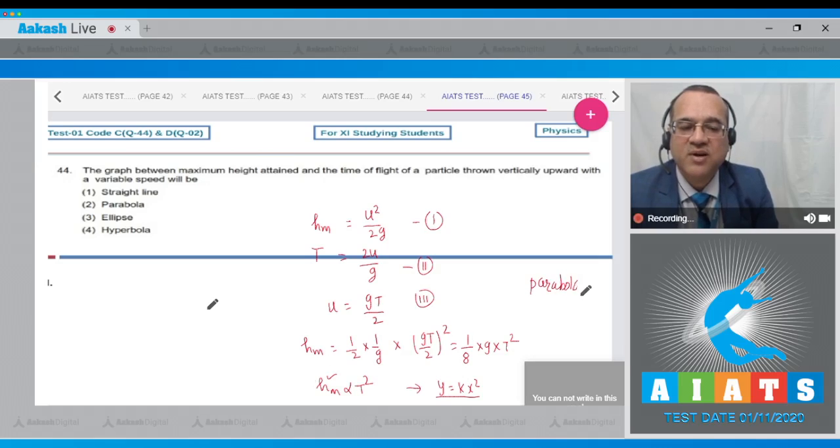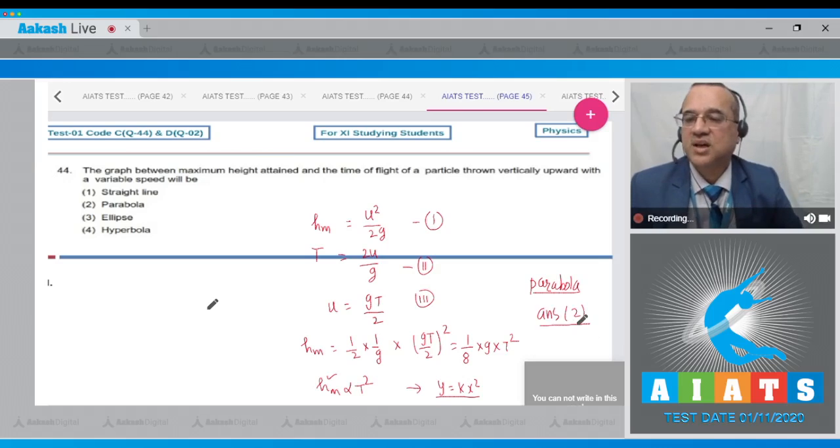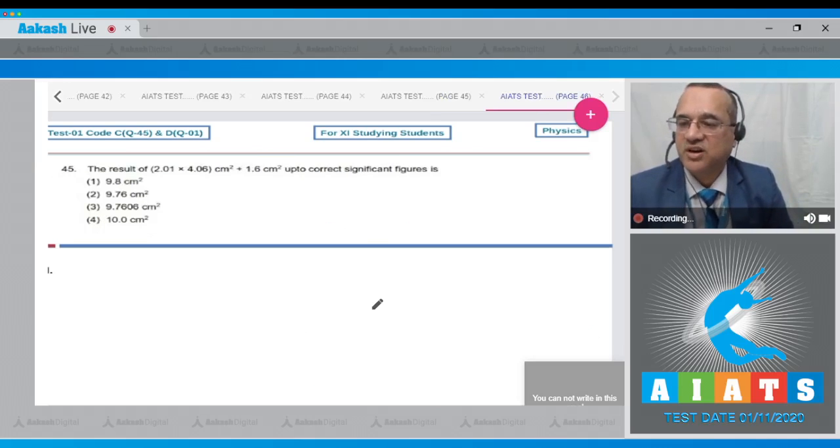The graph between h and t will be a parabola. Let us look at the options. The first option is straight line and the second option is parabola. The correct answer to this question is option number 2.